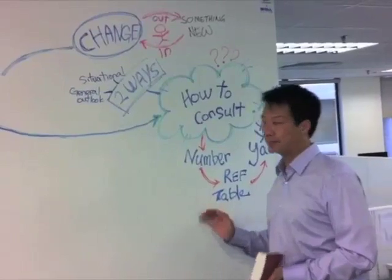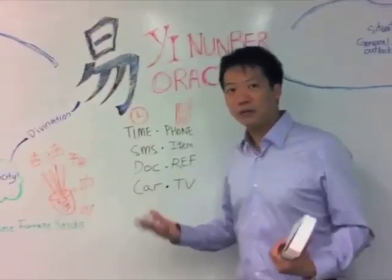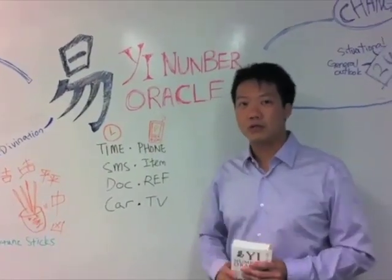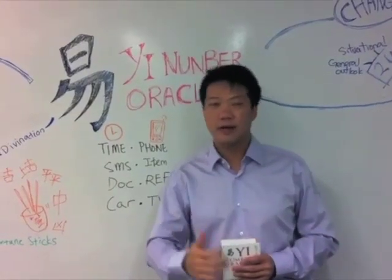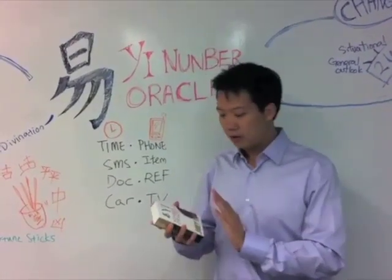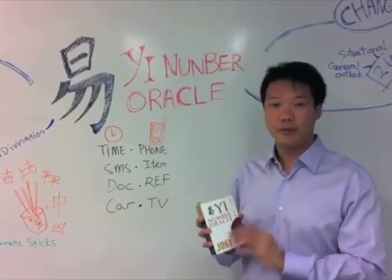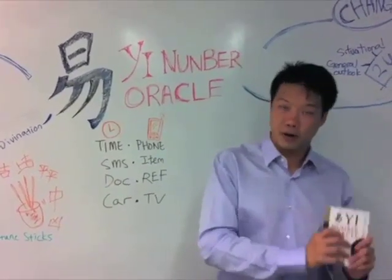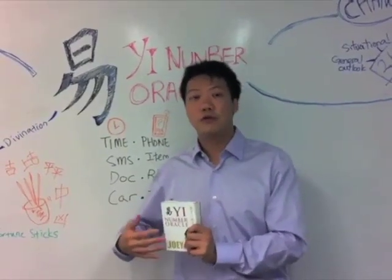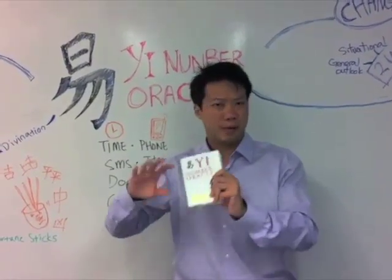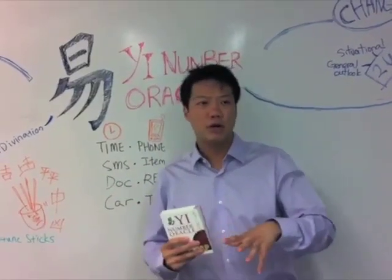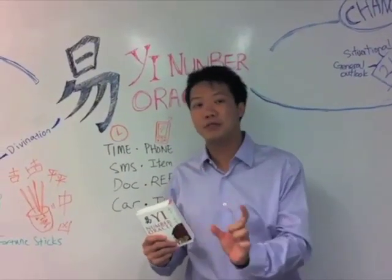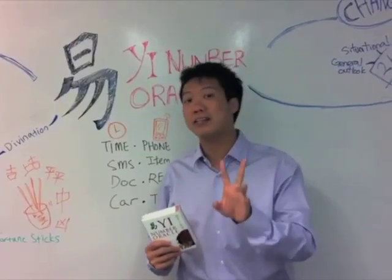There are many ways to derive a number. We must understand there are two ways to consult the Yi: the situational reading and the generic reading. This book is designed for situational reading — meaning you have a question or problem, you derive the number, and the number tells you the outcome. But you may also use it for a generic reading, where you want to know about a person's life in general — their luck and their outlook. You can look at generic numbers attached to that person.